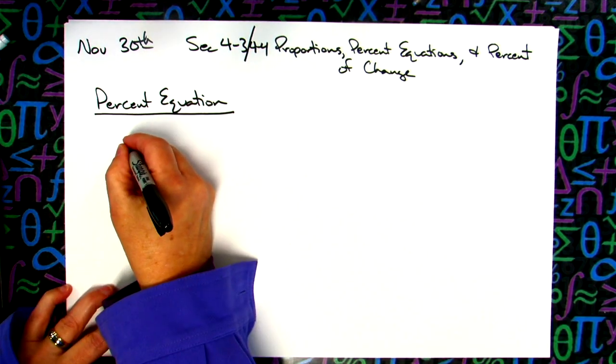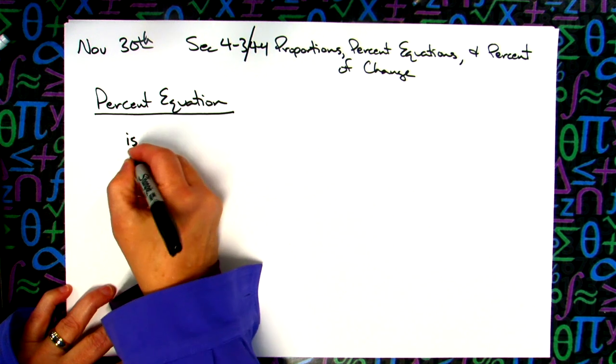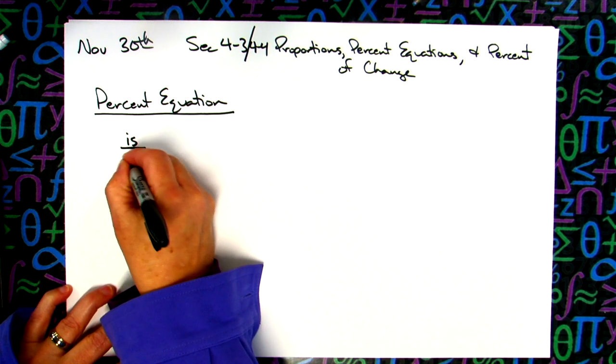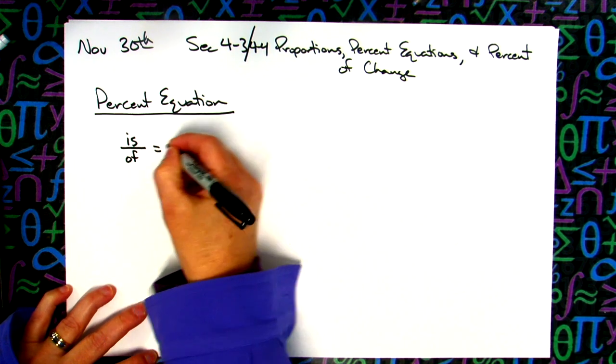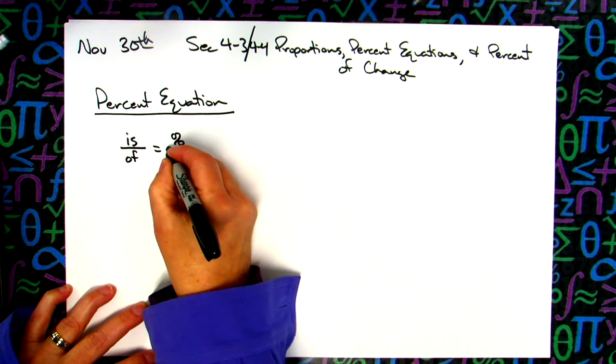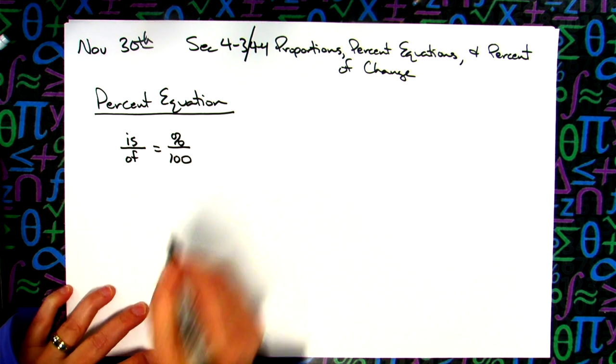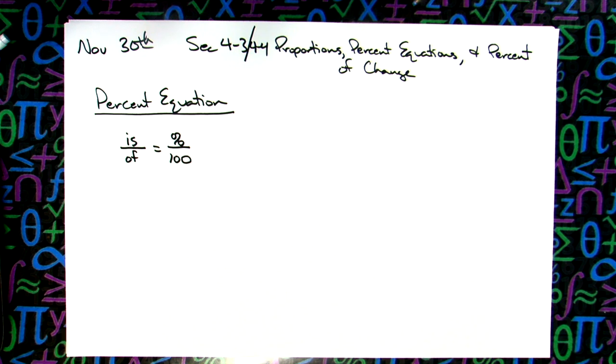It will be a proportion. It's going to be is over of equals percent over 100. You did do this in middle school last year, so this should be review. This is going to be our formula.